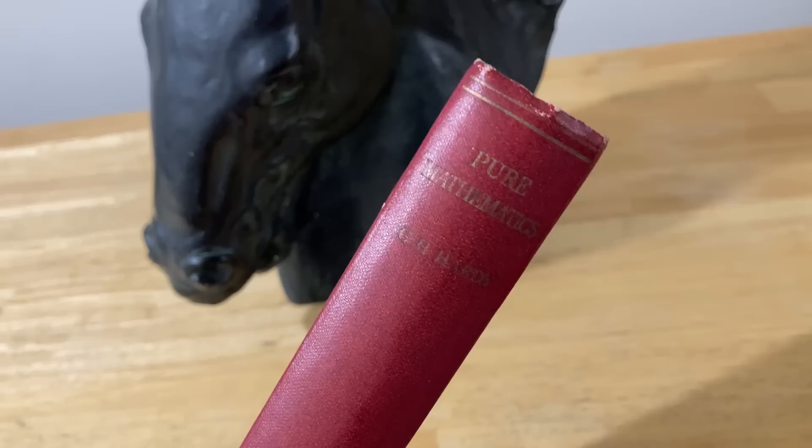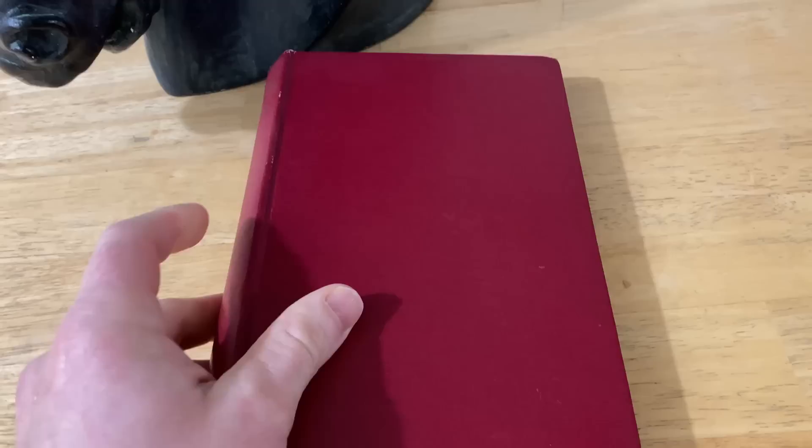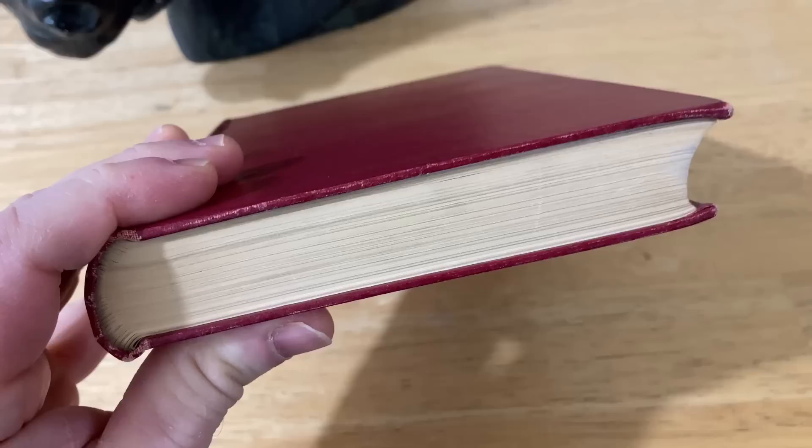This book is considered legendary. It's called Pure Mathematics, and it was written by G. H. Hardy. G. H. Hardy is the mathematician who worked with Ramanujan in England, and this is the book he wrote.